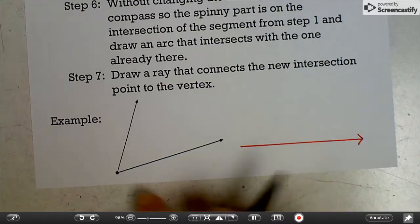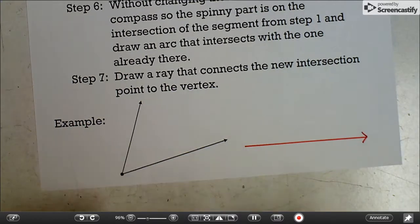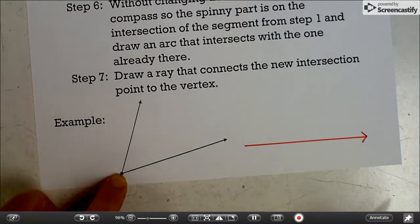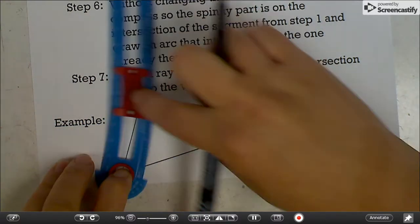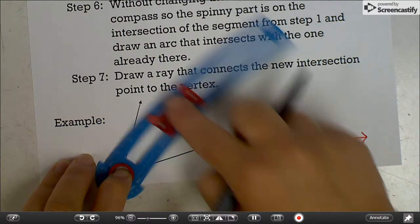And then you're going to do pretty similar to the other one. You're going to put your spinner on the vertex of your original angle. And you're going to make sure that your arc is going to cross both rays and draw an arc.